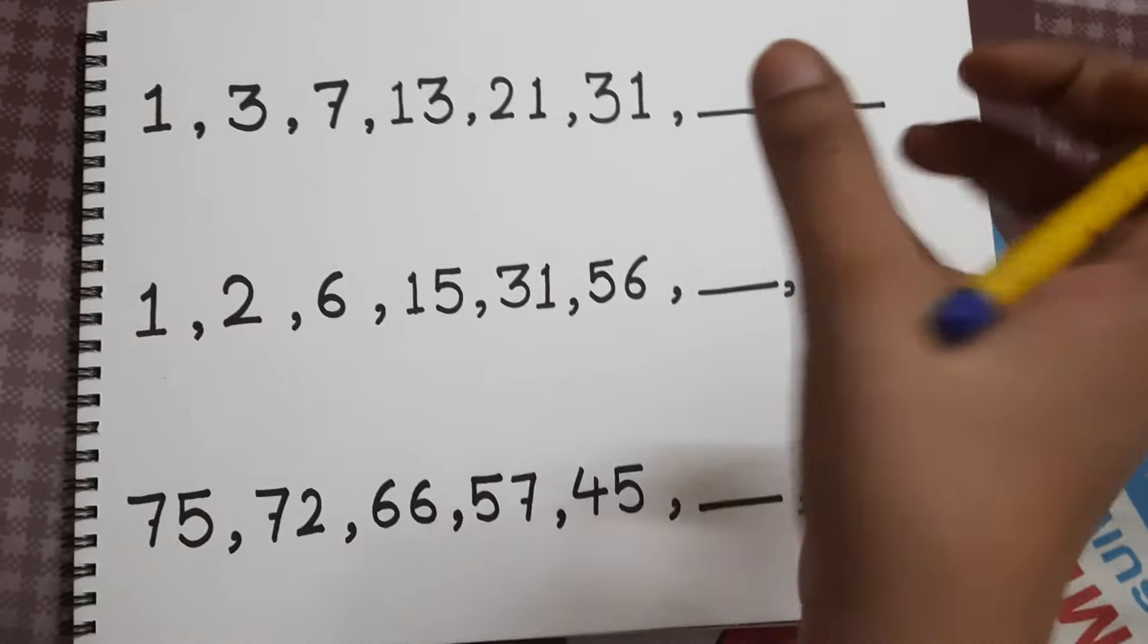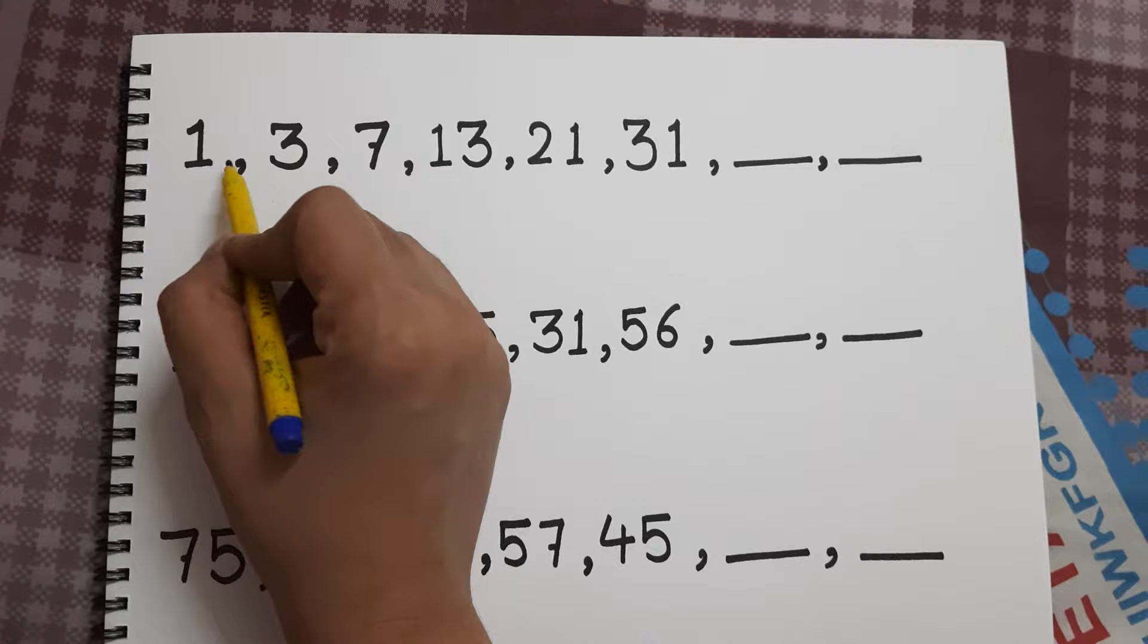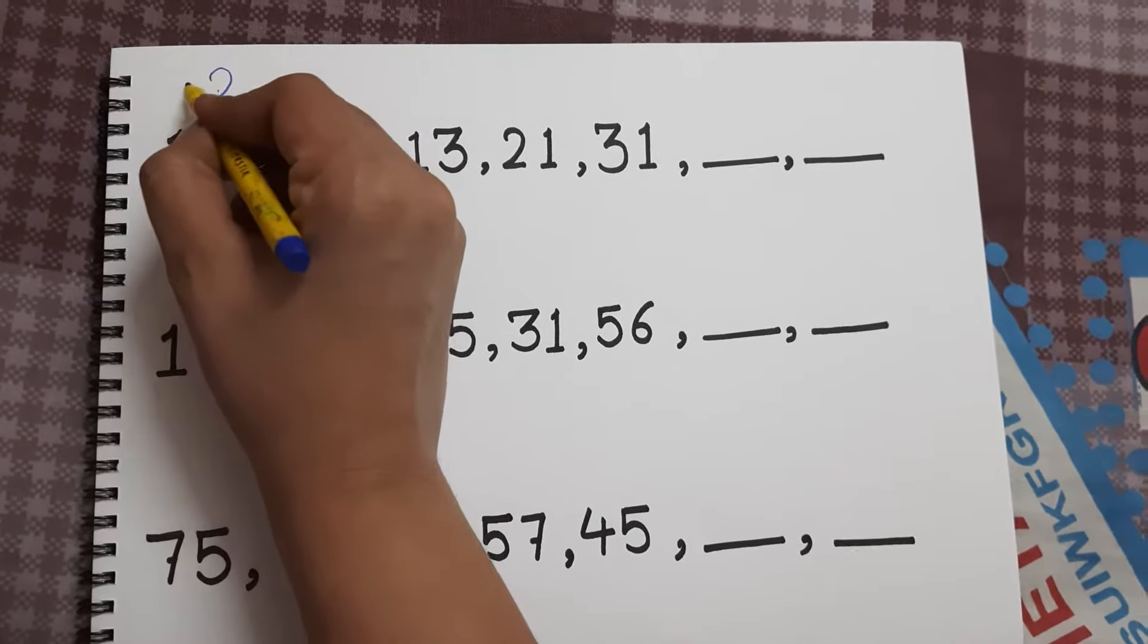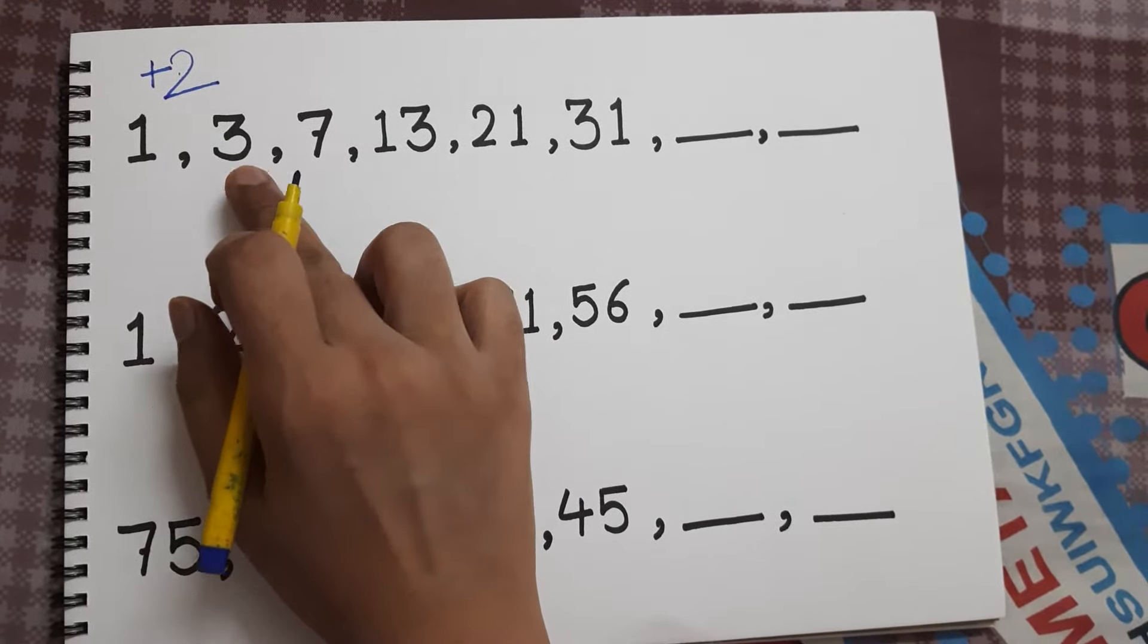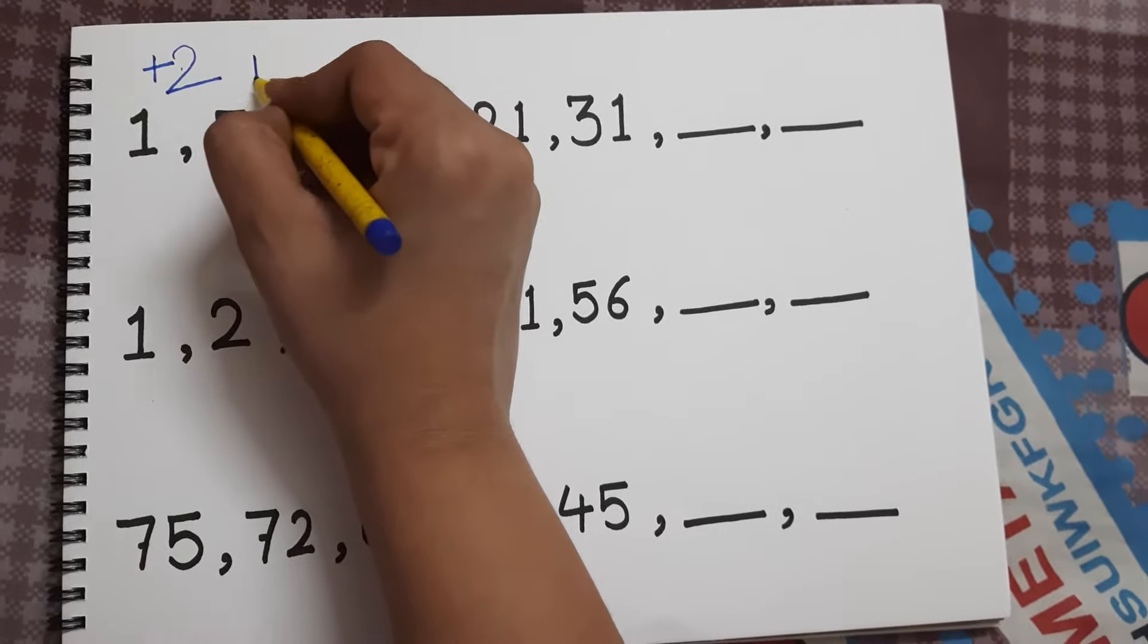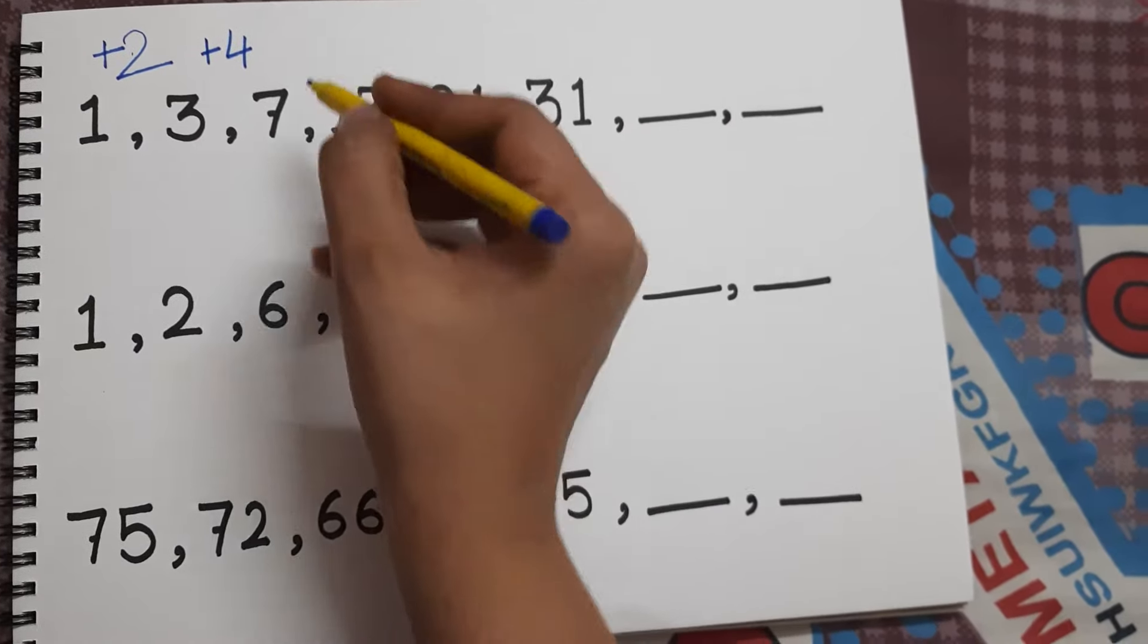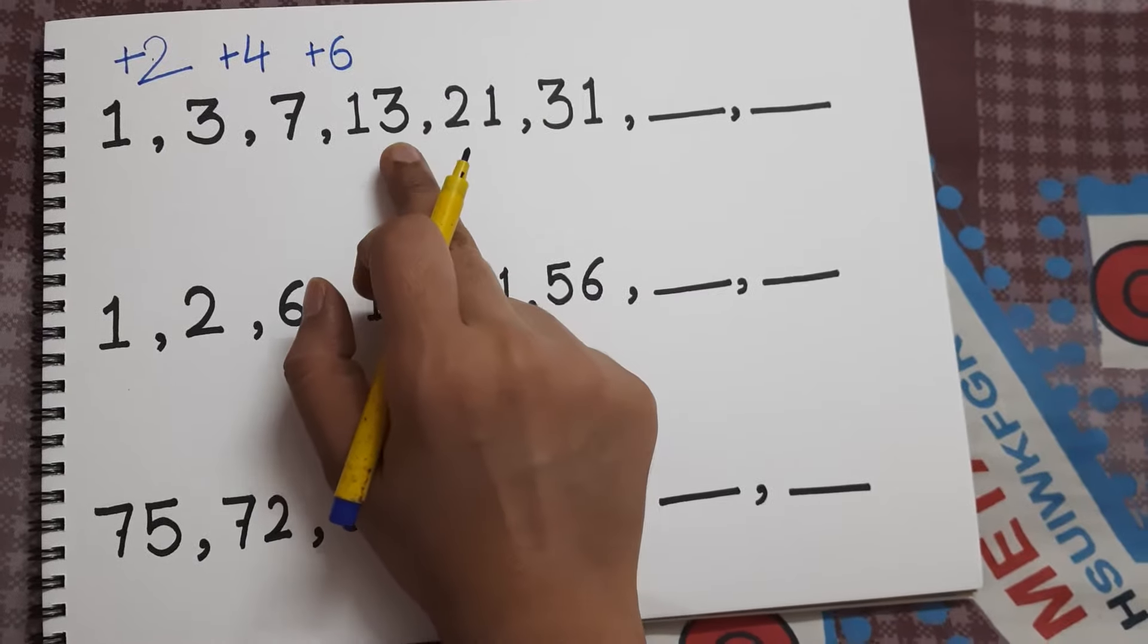Let's find out the gap between 1 and 3. What is the difference? It is 2, and since the number is increasing, we have added 2. Let's move ahead. It is 3 and 7, so what is the difference? It is plus 4. 7 and 13, the difference is yes, 6. So we have added 6.